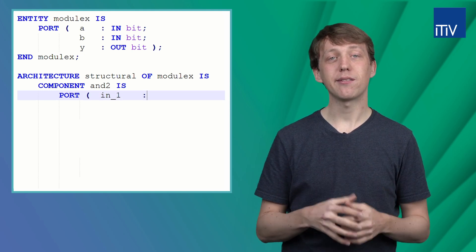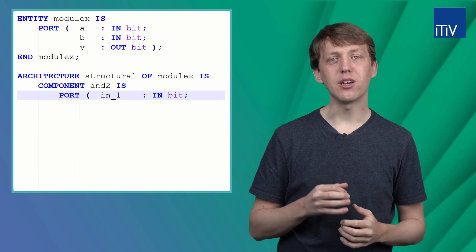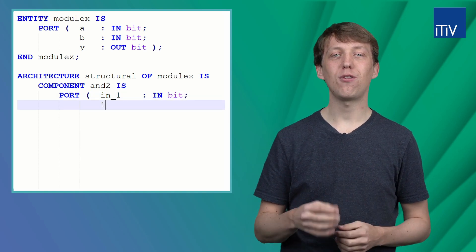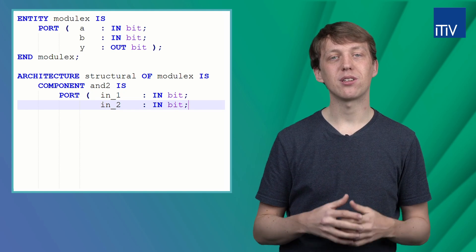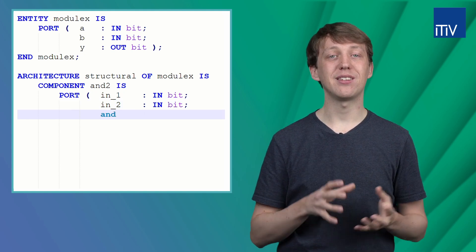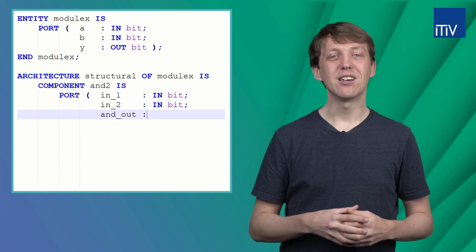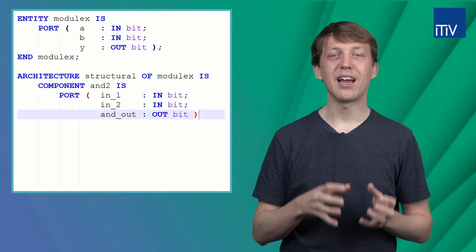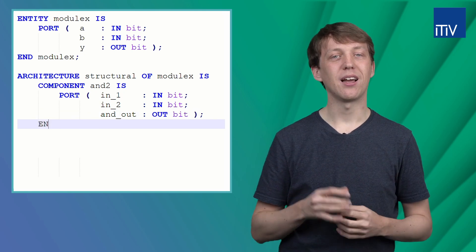Within the parenthesis, we list all the inputs and outputs of our design using the same keywords as we used when we defined the entity. The whole block is finished with the END component keyword and the semicolon.